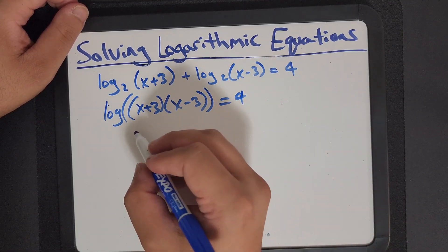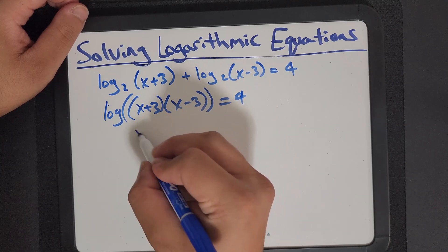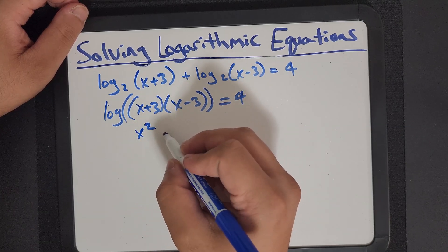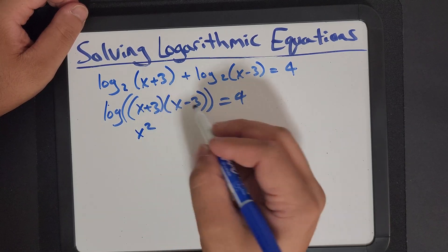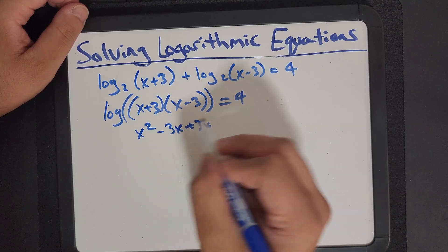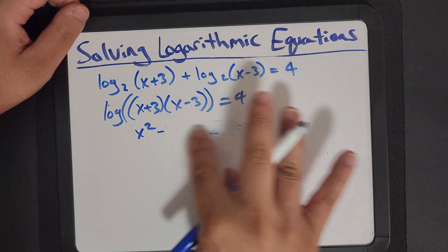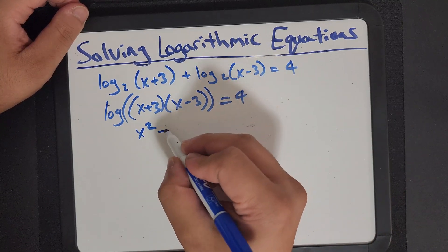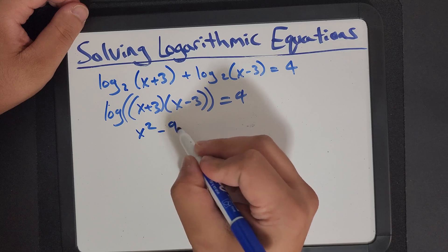x plus 3 times x minus 3 equals 4. Which means if I expand that, I'll have x squared. That looks like a difference of squares. So x minus 3 times x plus 3, the x's will cancel out, and I'll be left with 3 times 3 is 9.